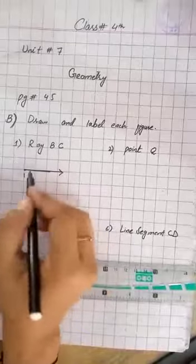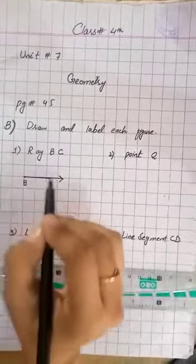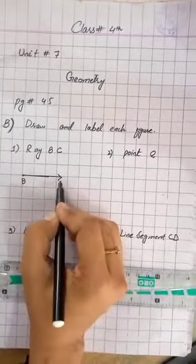Now, how do you draw the label? How do you label the starting point? What do you draw at the starting point? B. What do you draw here? B. And what do you draw here? C.